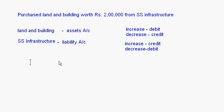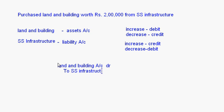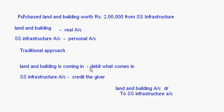Land and building — we did not have any initially; now we have purchased it for 2 lakh rupees, so that is an increase. Land and building is an asset and it is increasing, so land and building account is debited. SS Infrastructure's account is also increasing — initially we did not have to pay anything to him, now we have to pay rupees 2 lakh. So the liability has increased by 2 lakhs, meaning increase in the liability account is credited. So we write to SS Infrastructure account. Again, whatever approach you follow, the final debit and credit — the account to be debited and credited — will always be the same.